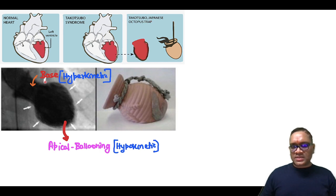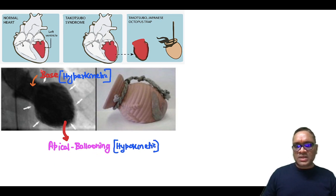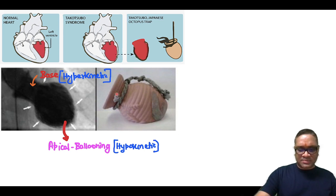This is the actual examination — you can see there is apical ballooning. This apical ballooning represents a hypokinetic left ventricular apex while the base is hyperkinetic, and this resembles the Takotsubo octopus-trapping device. That is why the name has been given.